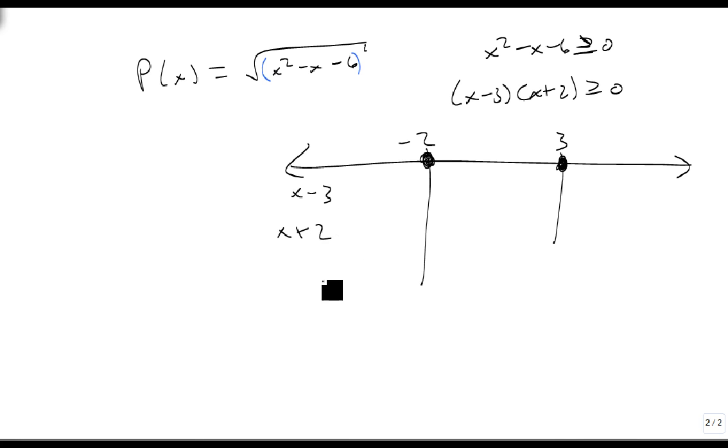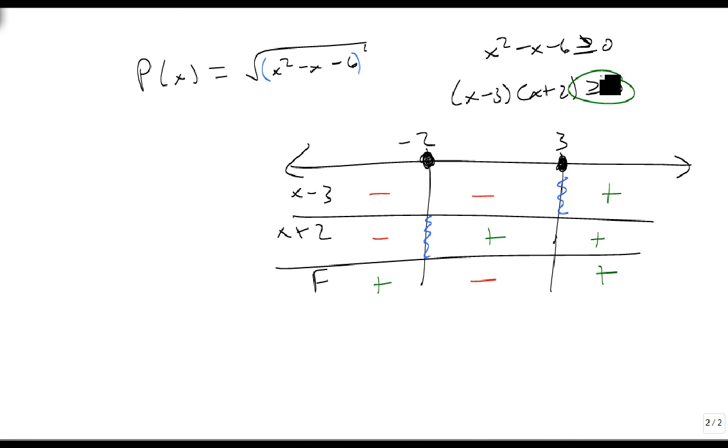We get x-3, x+2, and then our final product, the whole thing. x-3 is zero at 3, positive to the right, negative to the left. x+2 is zero at -2, positive to the right, negative to the left. A negative times a negative is a positive, a negative times a positive is a negative, and a positive times a positive is a positive. Since we're greater than or equal to zero, we shade in the positive regions.